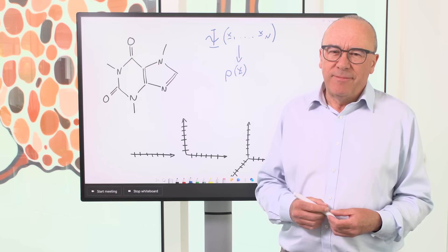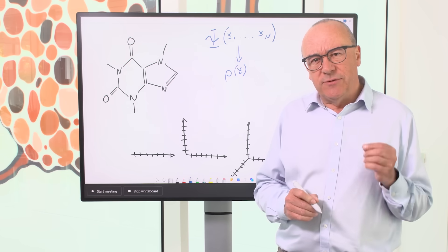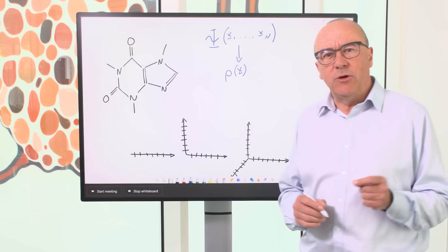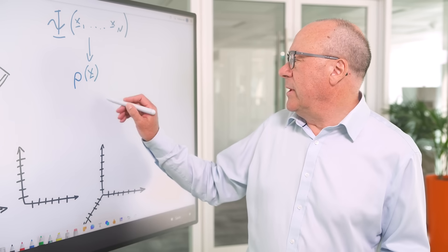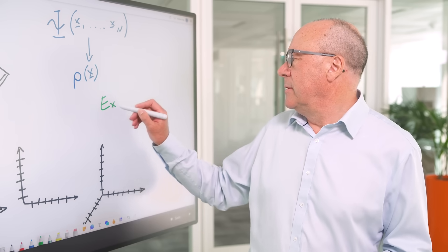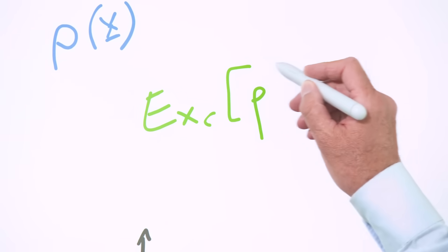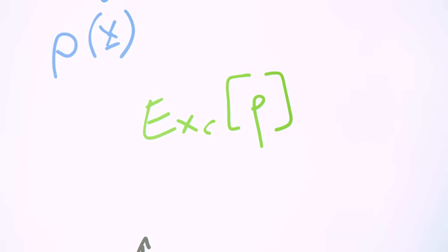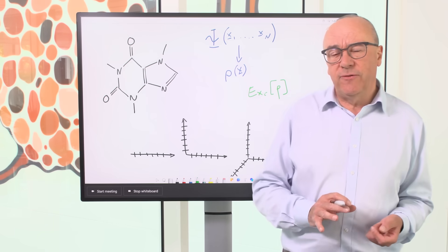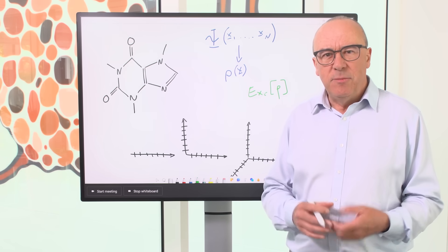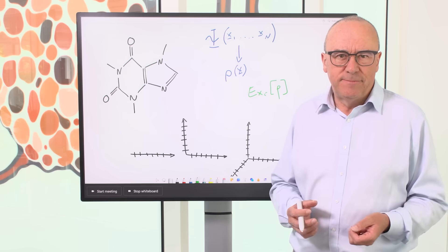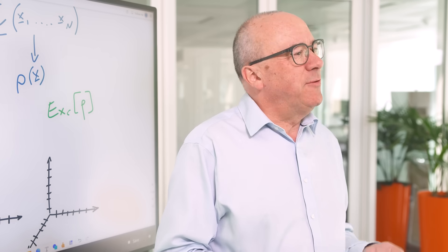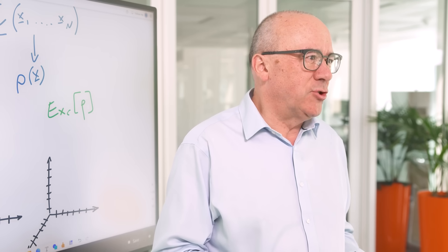But there's a huge catch. At the heart of the equations of DFT is a critical quantity called the Exchange Correlation Functional. And that's usually written like this. Now, what Cohn showed is that the Exchange Correlation Functional is universal, meaning it's the same functional across all molecular systems. Unfortunately, he wasn't able to write down an explicit form for the Exchange Correlation Functional.